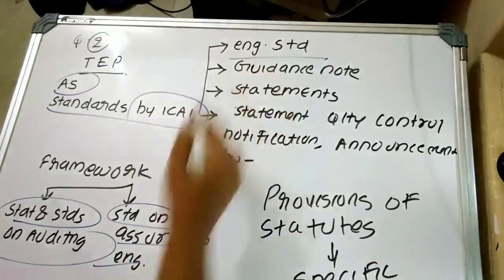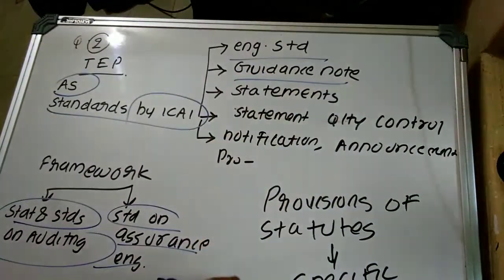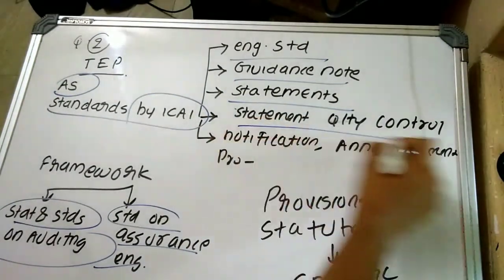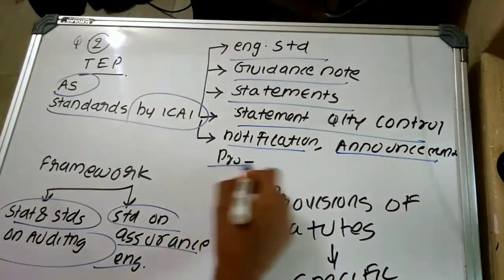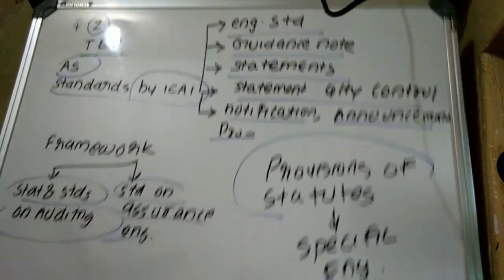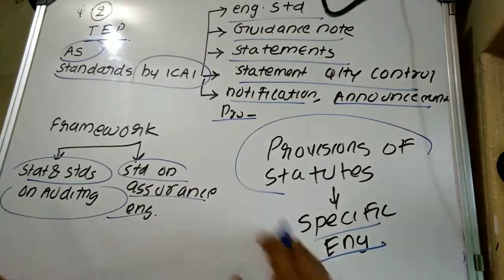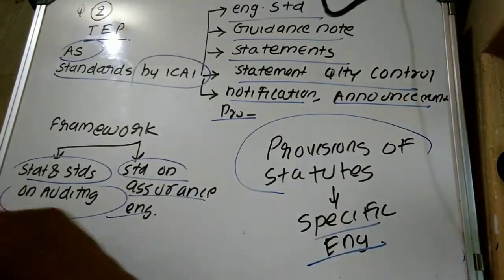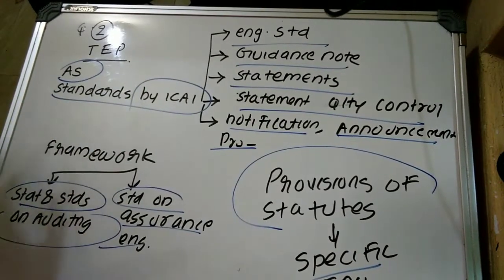It also includes engagement standards issued by ICAI, guidance notes issued by ICAI, statements issued by ICAI, statements on quality control, notifications, announcements and pronouncements, and provisions of relevant statutes which are applicable to specific engagements and which should be reviewed as per the directions and guidance of ICAI.